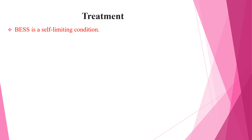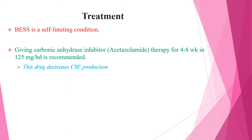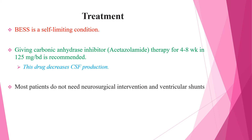Regarding treatment, benign enlargement of subarachnoid space is a self-limiting condition, but giving a carbonic anhydrase inhibitor — that is acetazolamide therapy — for 4 to 8 weeks on a daily basis is recommended. This drug, acetazolamide, decreases CSF production. Most patients do not need neurosurgical intervention and they improve themselves.